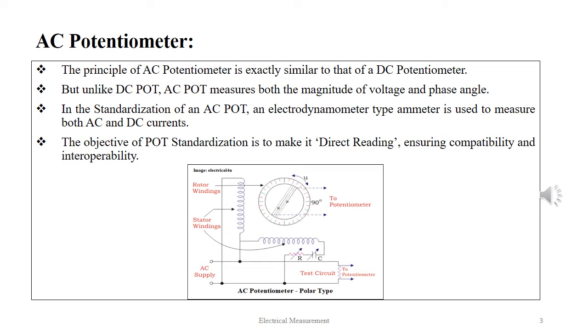Given below is an elementary circuit diagram of an AC pot where we see there are a couple of stator windings and one rotor winding.